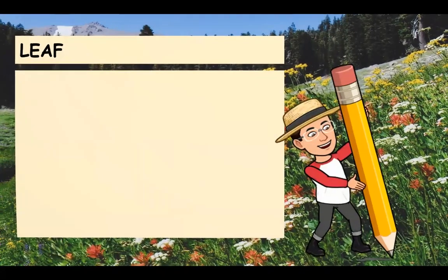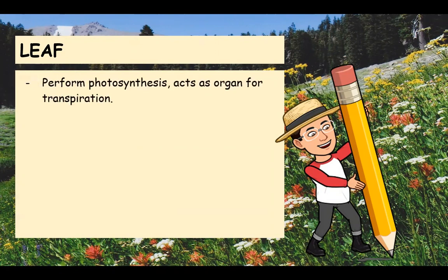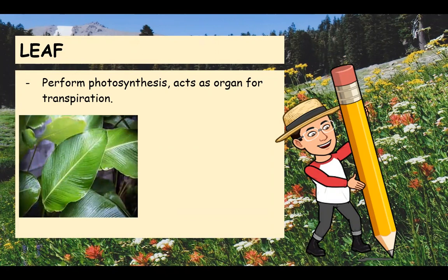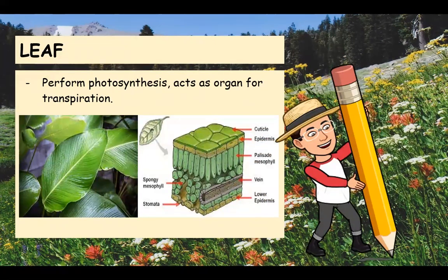The next part of the plant is the leaf, which is the main food-making organ of the plant. Leaves are generally green in color due to a pigment called chlorophyll, which is important in the plant's production of food. A cross-section of the leaf shows tiny openings called stomata, which are important in conducting carbon dioxide gas needed for photosynthesis and in the release of oxygen, a by-product of the same process.